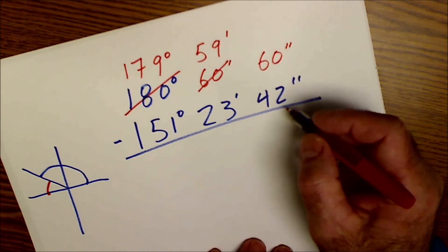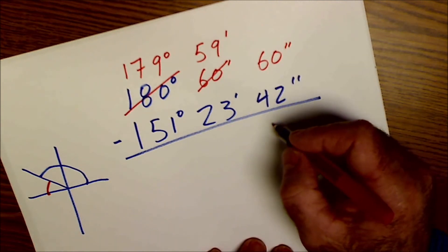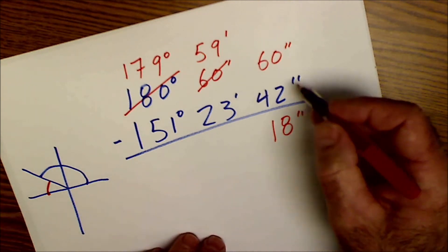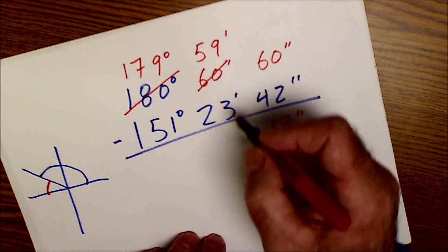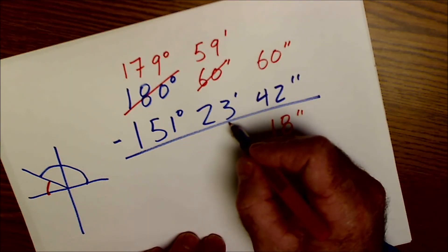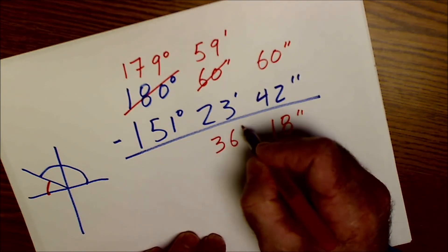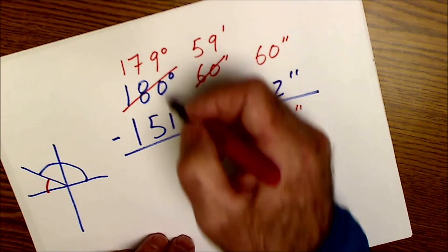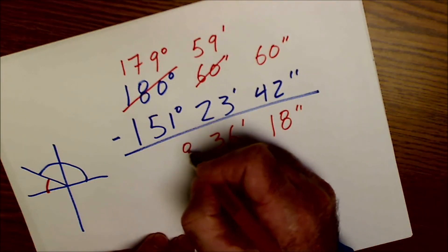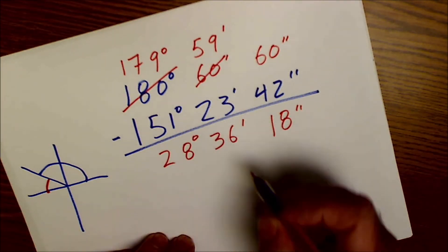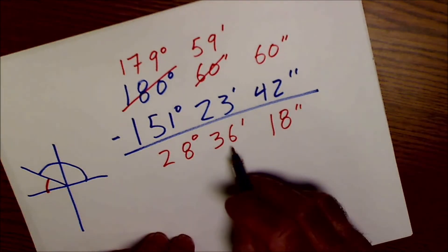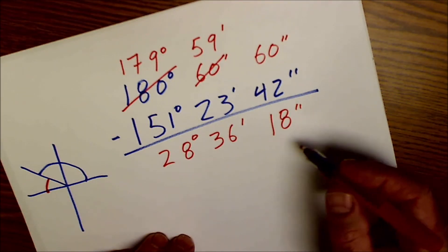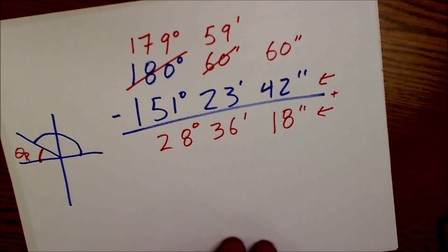Now: 60 minus 42 is 18 seconds. 59 minus 23 is 36 minutes. 179 minus 151 is 28 degrees. So the reference angle is 28 degrees, 36 minutes, 18 seconds. Hope that helped!